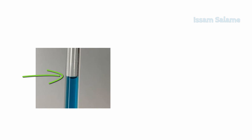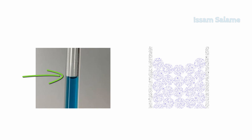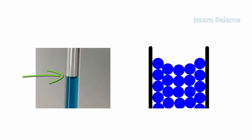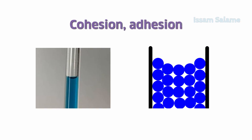Hi, look at the surface of the water in this glass. Do you know why it's not straight and has this concave meniscus shape instead? To answer this question, let me explain how cohesion and adhesion forces affect the surface tension of liquids.